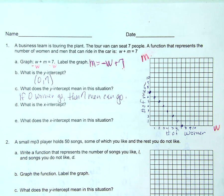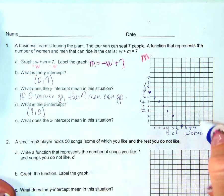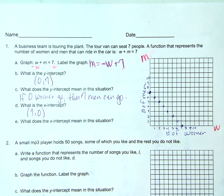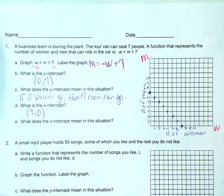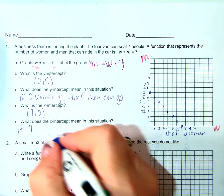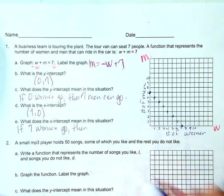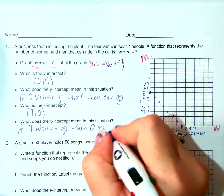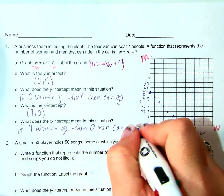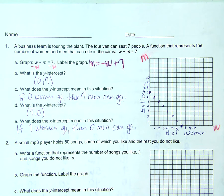What's my Y intercept? So I go up seven. What's my slope? Negative one over one. So down one, right one. Oh my gosh, there's so many dots. Tell me again, what is my Y intercept? Be careful. Zero, seven. Excellent. What does the Y intercept mean in this situation? If zero women go, then seven men can go. I'm going to zoom in just a little bit. That might help. Is that better? What's the X intercept? Seven, zero. It's right here. What does the X intercept mean in this situation? If seven women go, then zero men can go.